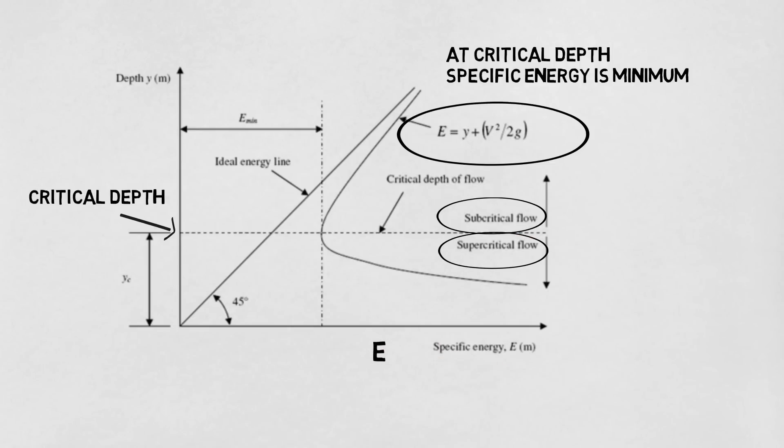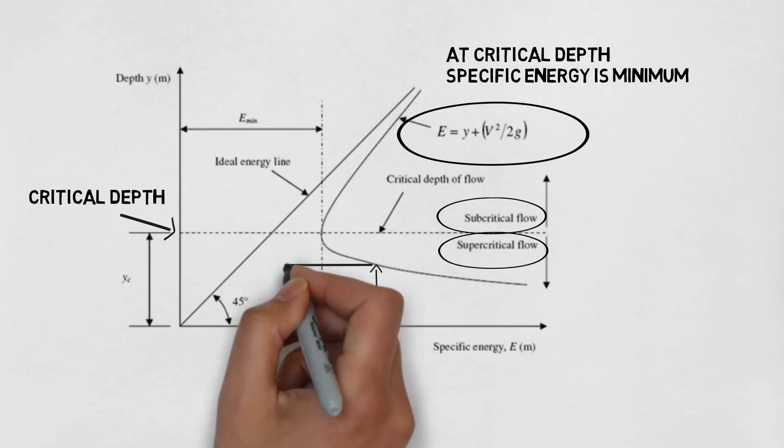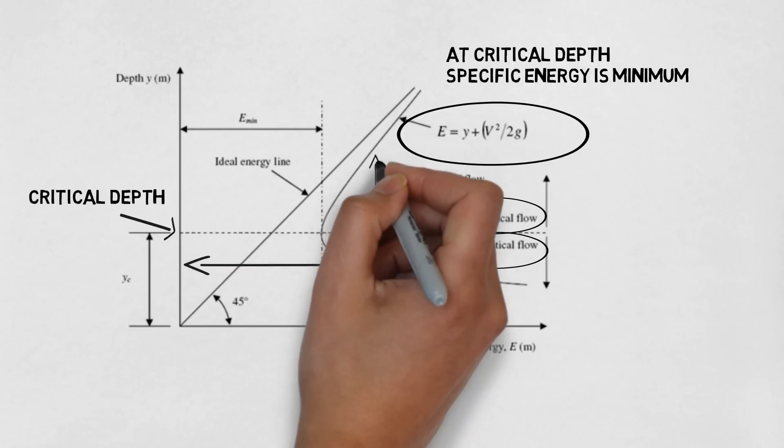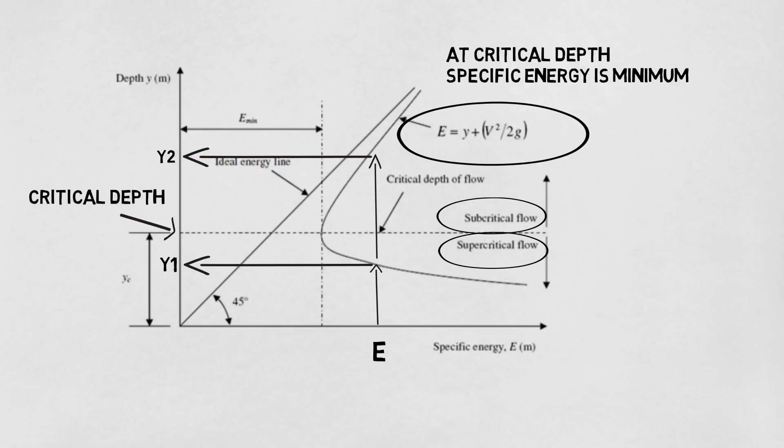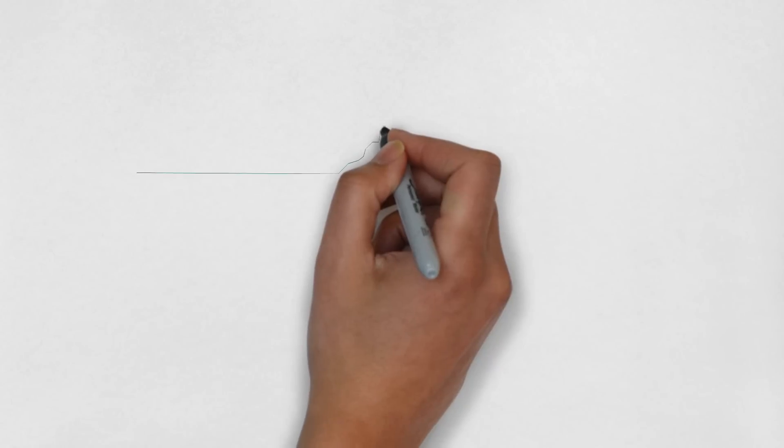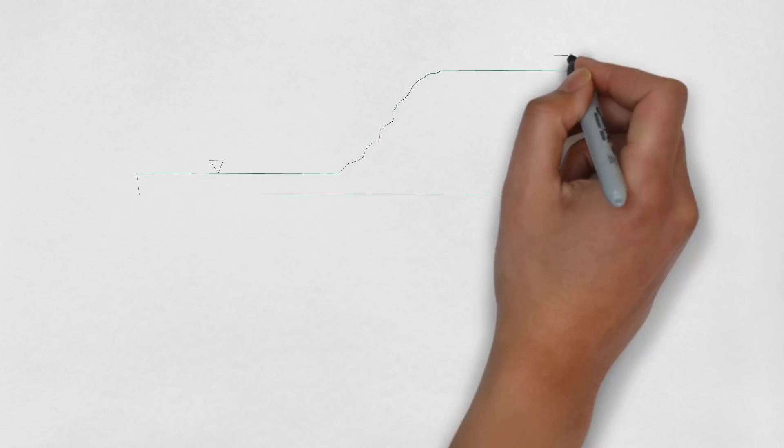For a given value of specific energy, we find that there are two depths, y1 and y2, on the supercritical side and the subcritical side respectively. For the same energy, the supercritical velocity is always greater than the subcritical velocity. But this is what the cross section of a hydraulic jump looks like.